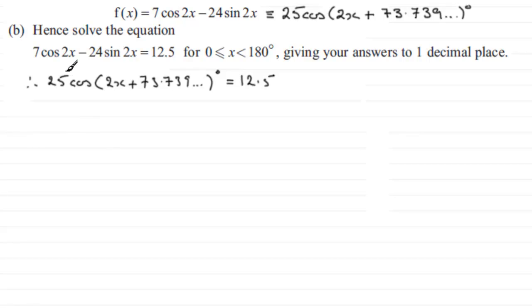Next I need to remove the 25. So I divide both sides by 25 and if I do that, we've just left with the cos then of 2x plus 73.739 and so on degrees equals 12.5 divided by 25, which is a half or as a decimal, 0.5.